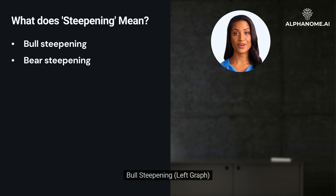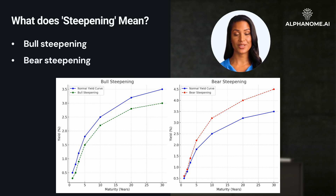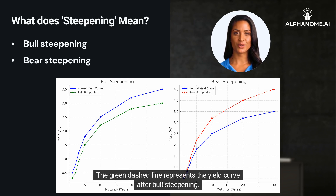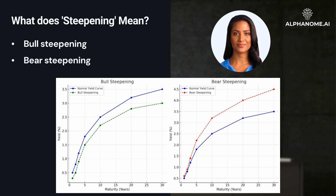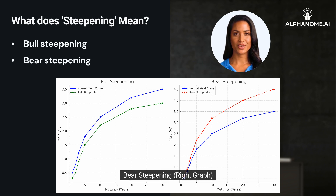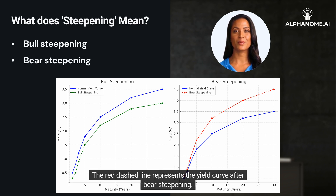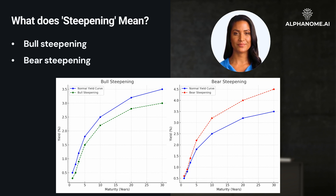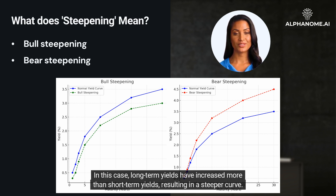Bull steepening — left graph: the green dashed line represents the yield curve after bull steepening. As observed, short-term yields have decreased more than long-term yields, leading to a steeper curve. Bear steepening — right graph: the red dashed line represents the yield curve after bear steepening. In this case, long-term yields have increased more than short-term yields, resulting in a steeper curve.